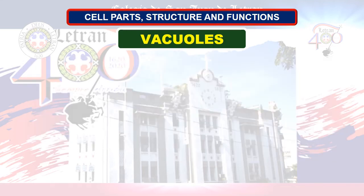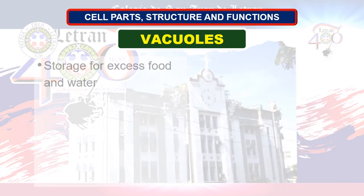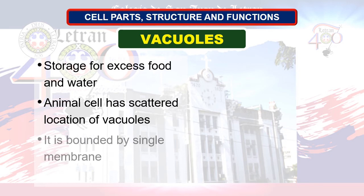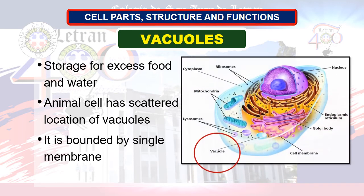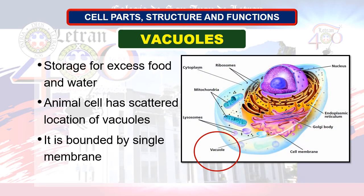Next in line: vacuoles. Vacuoles are the storage center of the cell — storage for excess food and water. Vacuoles are membrane-enclosed cavities filled with either fluid or granular material. Some vacuoles expel excess water and waste from the cell; these are called contractile vacuoles. Food vacuoles contain food particles.